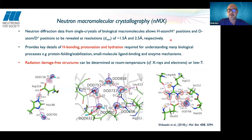Neutron diffraction data can provide positions of hydrogen atoms, protons, and deuterium at resolutions of around 1.5 Ångströms for hydrogens and 2.5 Ångströms or better for deuteriums. Compared to X-rays, where we need subatomic resolution to start locating hydrogens, even at medium resolutions of 2.5 Ångströms we can locate deuterium atoms in neutron maps.